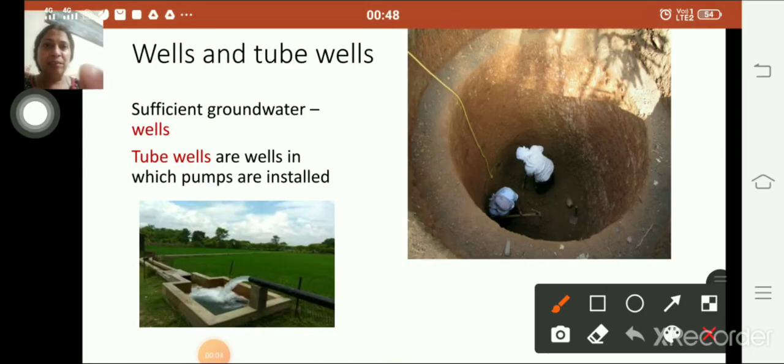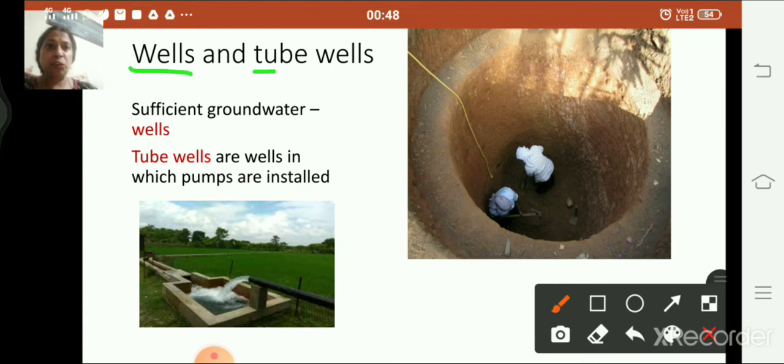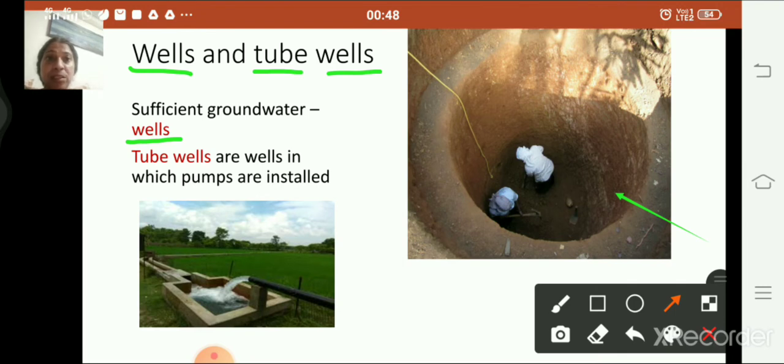Children, our next topic is wells and tube wells. So in places where there is sufficient groundwater, wells are dug. So wells are dug where there is sufficient groundwater. Tube wells are wells in which pumps are installed. So pumps are installed to draw water from the well.